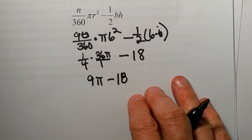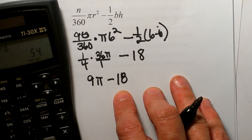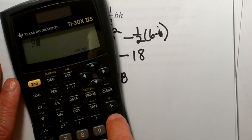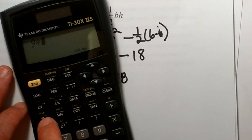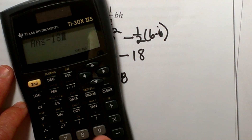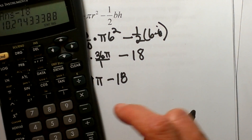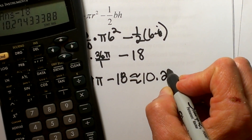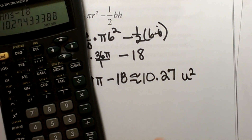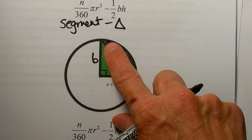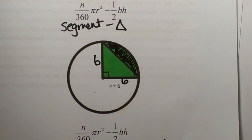That is an exact value. If they want exact, you leave it as 9 pi minus 18. Or you can go to your calculator — 9 times pi, using the pi button — and get 28.27, then subtract 18 to get approximately 10.27 square units. And that is how you find the area of a segment, or the pizza crust. Hope this video was helpful.